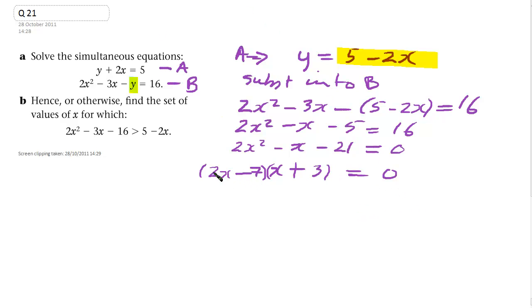Now, either this must equal 0 or this must equal 0. So 2x minus 7 must equal 0, or x plus 3 must equal 0. So 2x equals 7, so that gives us x is 7 over 2. And this will give us x is minus 3.